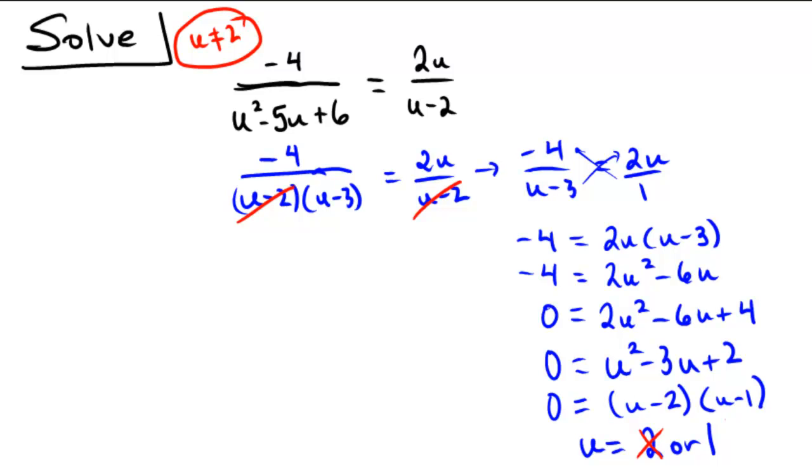So to submit, if you want full credit on an exam or homework or something, we need to say that u equals 1. You're not allowed to say 1 or 2 because 2 doesn't actually work. So the moral of the story is make sure that you check your answers when you work with rational equations.